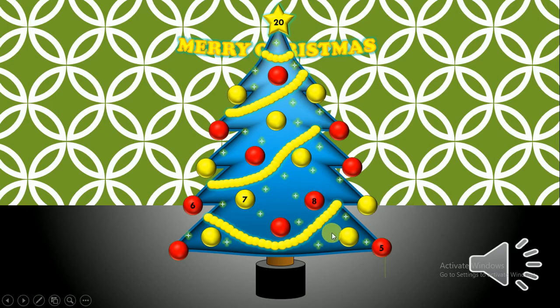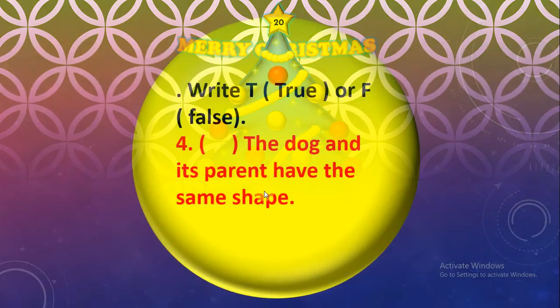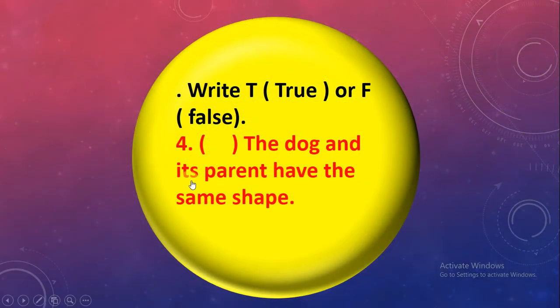Okay, let's try number 5. The dog and its parent has the same shape. Dog and its parent have the same shape. True, excellent.